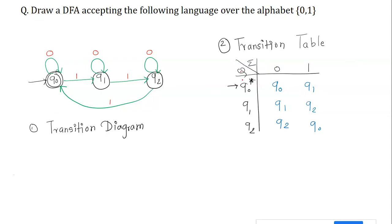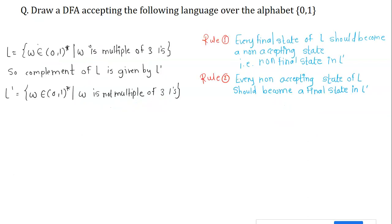The transition table entries are: δ(q0, 0) = q0, δ(q0, 1) = q1; δ(q1, 0) = q1, δ(q1, 1) = q2; δ(q2, 0) = q2, δ(q2, 1) = q0. Here q0 is marked as both the initial and the final state.